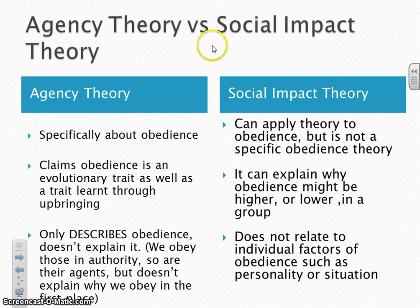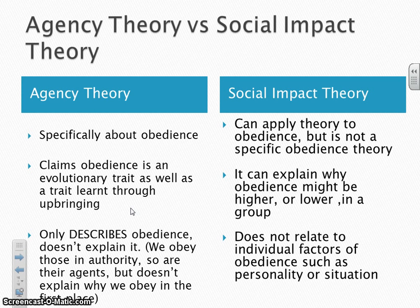Comparing Social Impact Theory with Agency Theory: Agency Theory is specifically about obedience, whereas Social Impact Theory is not, but can be applied to obedience. Agency Theory claims that obedience is an evolutionary trait and only describes obedience rather than explaining why it occurs. Social Impact Theory explains obedience in terms of group status, though like Agency Theory, it doesn't fully account for individual factors.